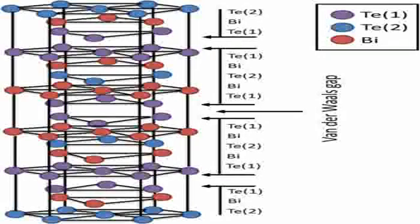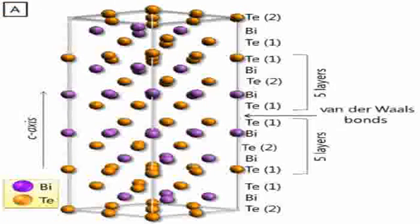In conclusion, while bismuth telluride might not be a household name, it plays a critical role in a range of high-tech applications. Its unique properties make it an important material in both industry and science.